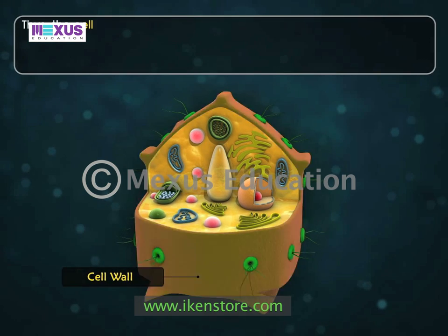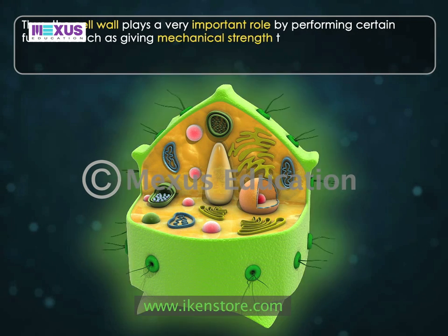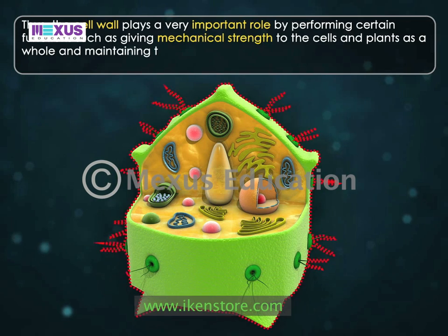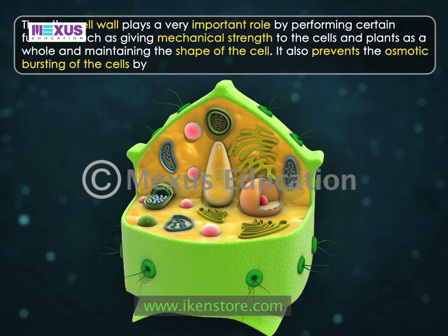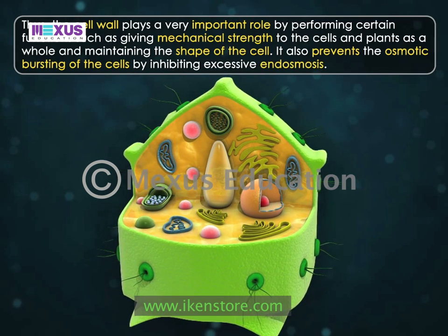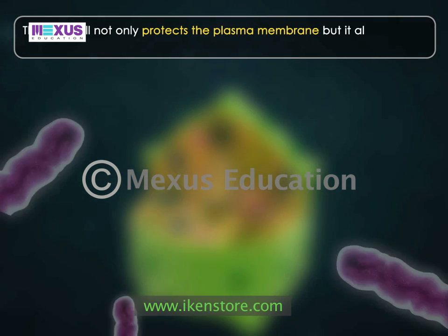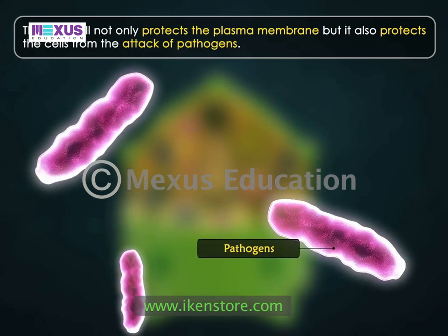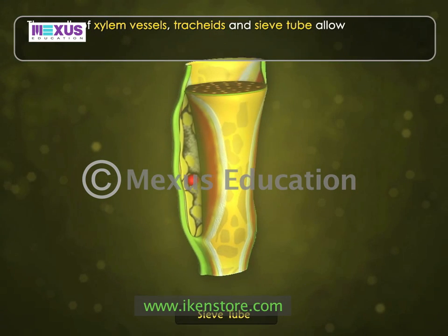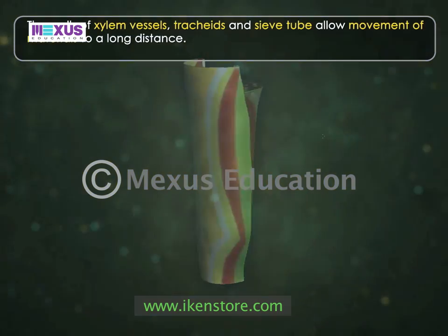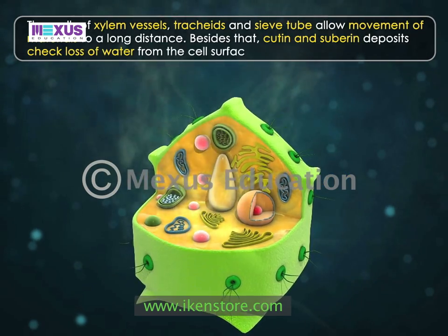The cell wall plays a very important role by performing certain functions such as giving mechanical strength to cells and plants as a whole, and maintaining the shape of the cell. It also prevents the osmotic bursting of cells by inhibiting excessive endosmosis. The cell wall not only protects the plasma membrane but also protects the cells from the attack of pathogens. The walls of xylem vessels, tracheids, and sieve tubes allow movement of materials over long distances. Cutin and suberin deposits check loss of water from the cell surface by evaporation.